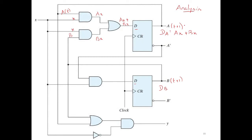Since this is a D flip-flop, whatever appears at the input will appear at the output directly. So a(t+1) = ax + bx. For flip-flop B, the input line comes from ā (a-bar) and x, giving DB = ā·x, and therefore b(t+1) = ā·x.